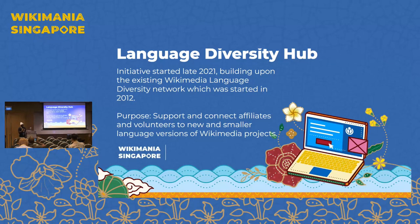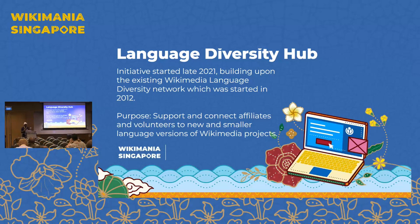The Language Diversity Hub initiative started in 2021, building upon the existing Wikimedia Language Diversity Network which started way back in 2012. The purpose of this was to support and connect affiliates and volunteers to new and smaller language versions of Wikimedia projects. We have been working on this project since 2021, and we have a steering committee from a very diverse linguistic background and also from different regions of the world.